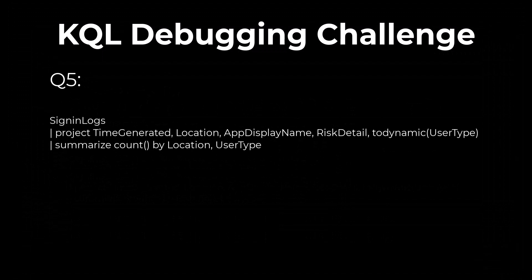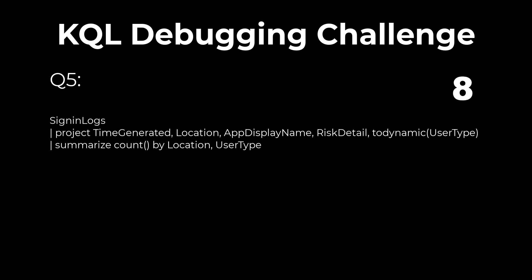Problem 5. Find the bug in the following summarization. Summarizations and dynamic data types throw an error. Dynamic data should be cast to a string or other data type prior to making the summarization.